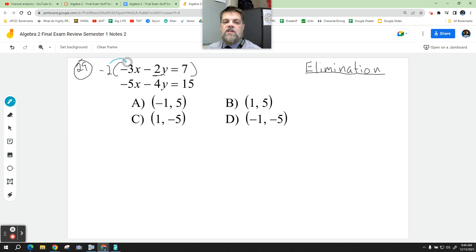So negative 2 times negative 3x is a positive 6x. Negative 2 times the negative 2y is a positive 4y. And then negative 2 times 7 is a negative 14. So believe it or not, this little equation in blue is the same as the original equation up here. I just multiplied everything by negative 2.